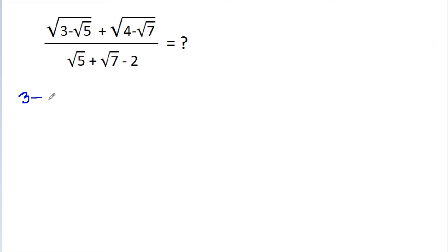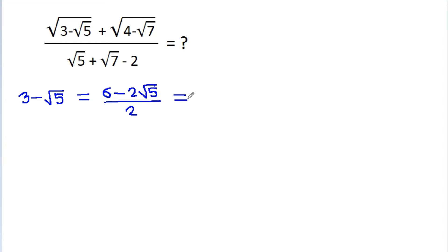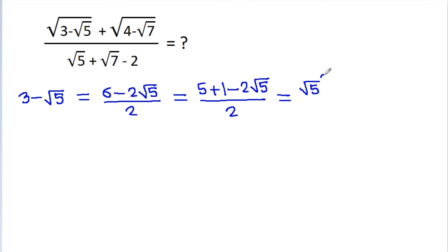So, 3 minus square root of 5 is equal to 6 minus 2 times square root of 5, divided by 2. And it is equal to 5 plus 1 minus 2 times square root of 5, divided by 2. And 5 is square root of 5 squared plus 1 is 1 squared, minus 2 times square root of 5 times 1, divided by 2.